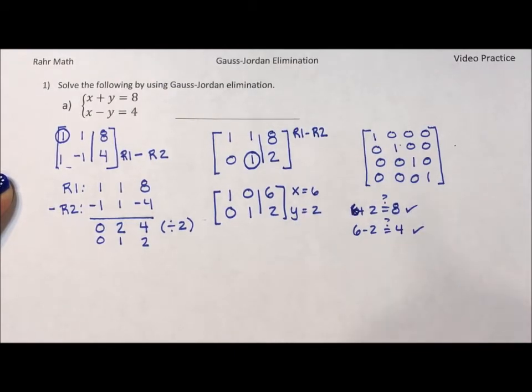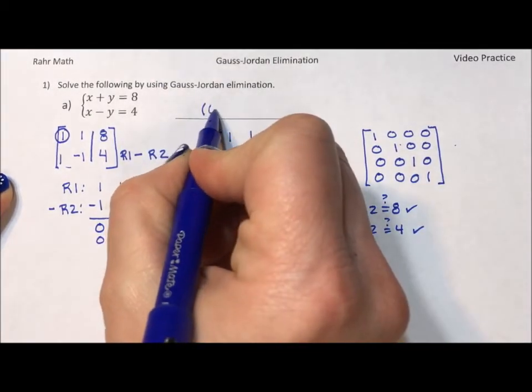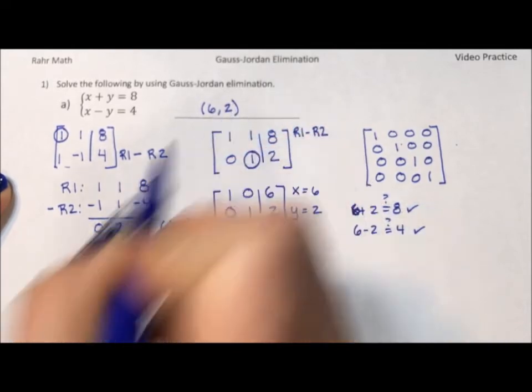So we write our answer as an ordered pair with parentheses. Six comma two.